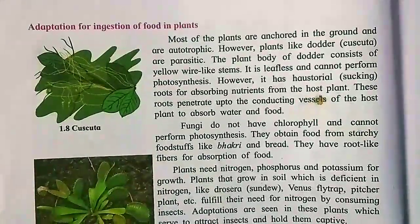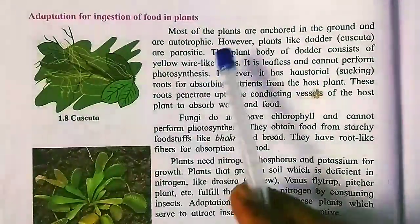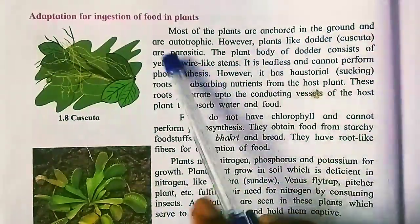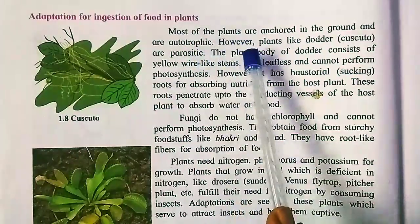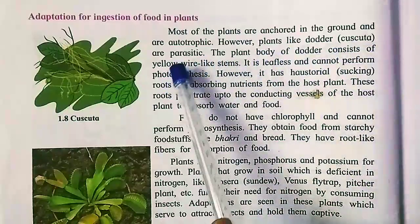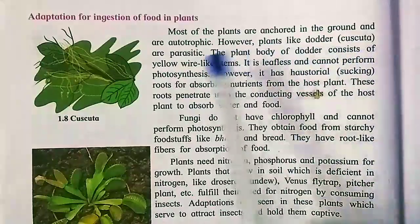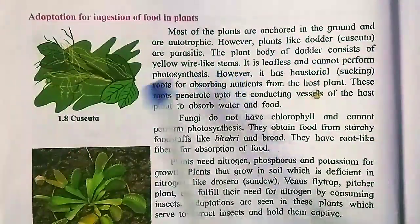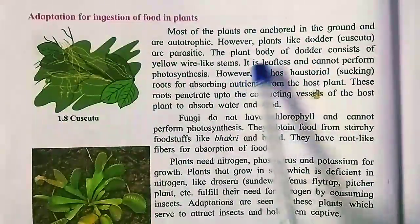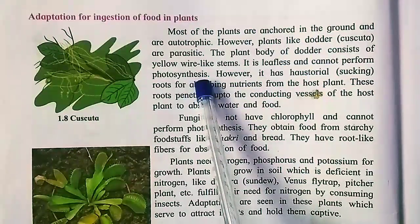Adaptation for ingestion of food in plants: most of the plants are anchored in the ground and are autotrophic. However, plants like dodder or Cuscutta are parasitic. The plant body of dodder consists of yellow wire-like stems. It is leafless and cannot perform photosynthesis — it has no leaves.